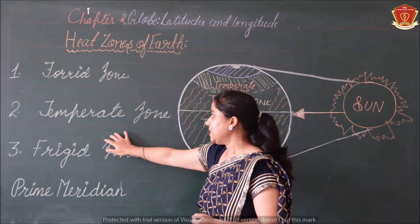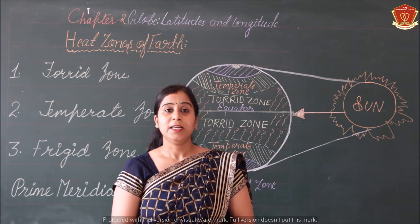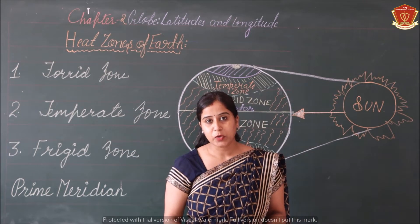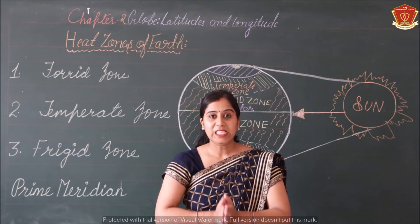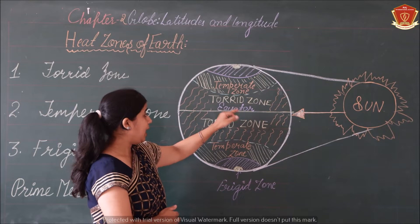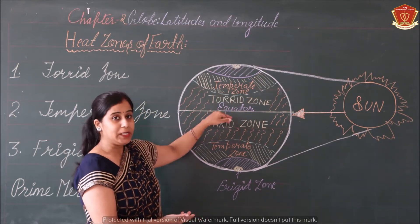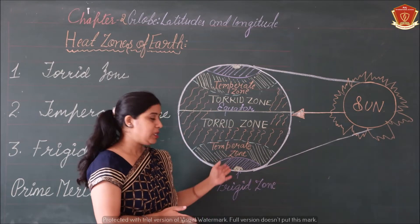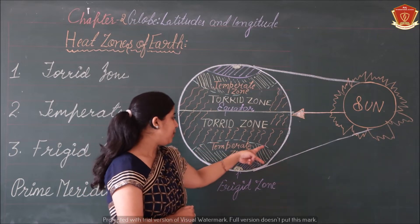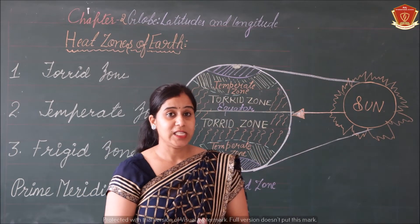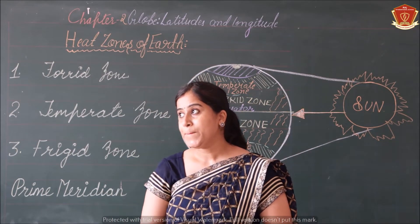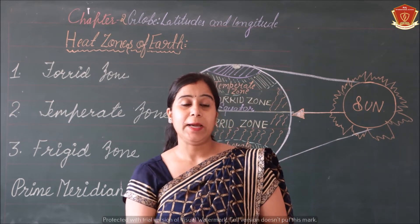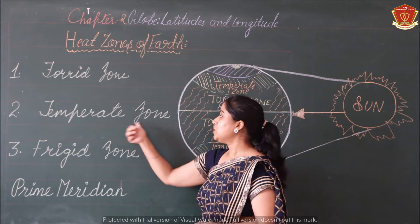Next zone pe jaate hain students — that is Temperate zone. As the name suggests, temperate means moderate temperature. This zone is not too hot and not too cold — it is the middle zone. Countries in the temperate zone include Australia, Africa, and India. The sun rays in the temperate zone are less direct compared to the torrid zone.